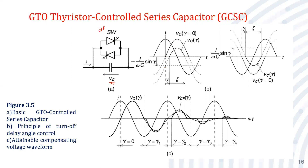When the turn-off delay angle is gamma, the voltage across the capacitor decreases from its maximum value. To understand this clearly: when the GTO switch is closed, current diverts through it and the capacitor voltage becomes zero; when the switch is open, the capacitor voltage is maximum. By controlling the turn-off delay angle, the voltage across the capacitor changes smoothly, hence it is called similar to the thyristor-controlled reactor.